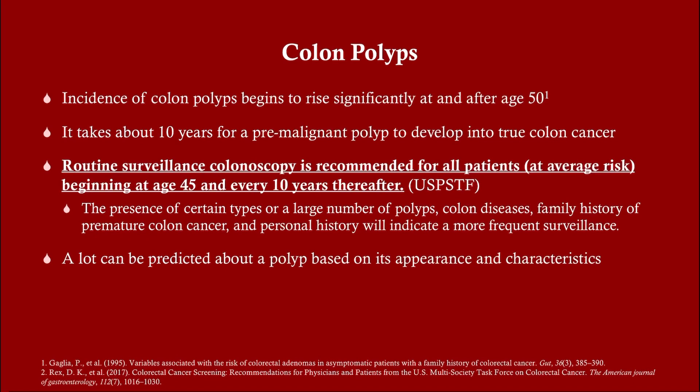Colon polyps tend to occur in older people. It takes about 10 years for a premalignant polyp to progress to a carcinoma — that's called the adenoma-carcinoma sequence. All cancers begin as an adenoma. We do colonoscopies every 10 years on anybody, and if we find a polyp we remove it so the patient won't develop colon cancer before their next screening colonoscopy. Routine surveillance is recommended for all patients at average risk starting at age 45 — that is actually new; it used to be 50. This recommendation is from the USPSTF.